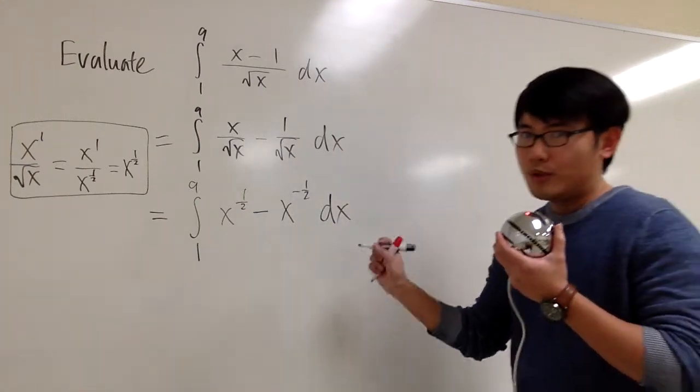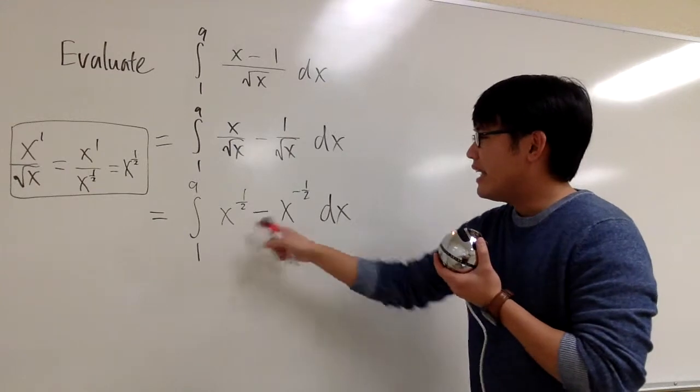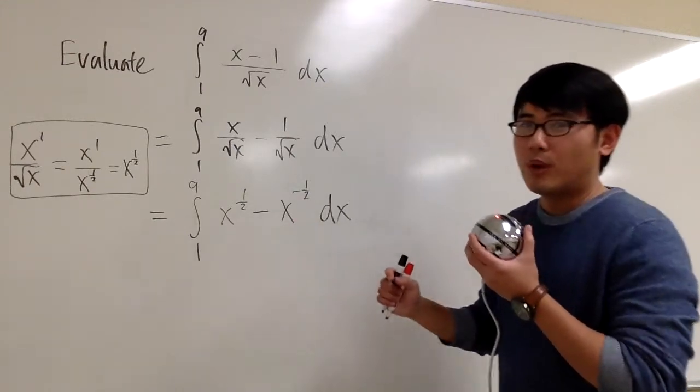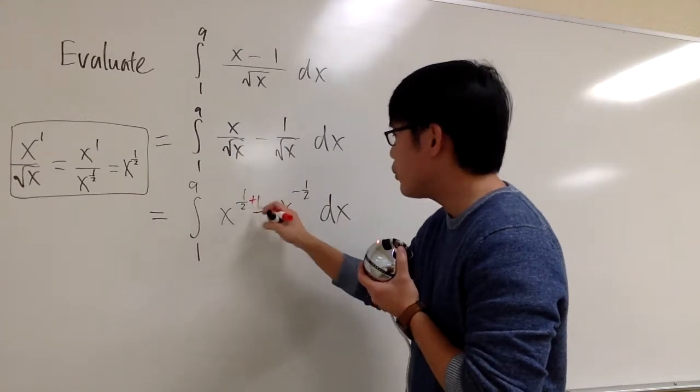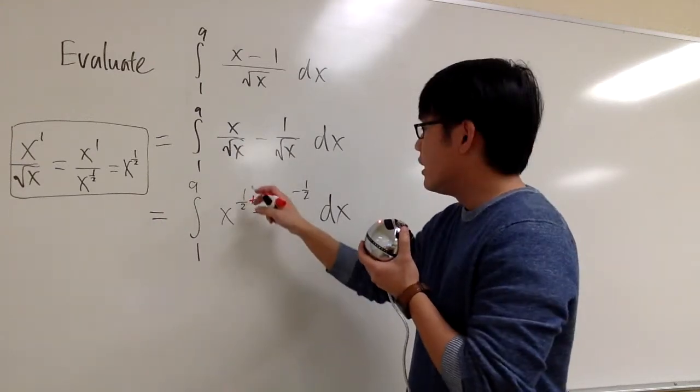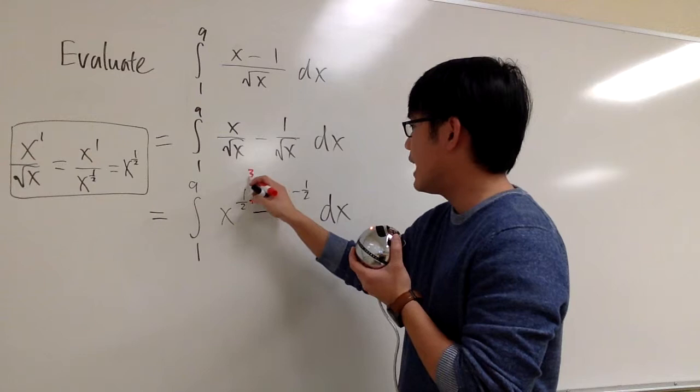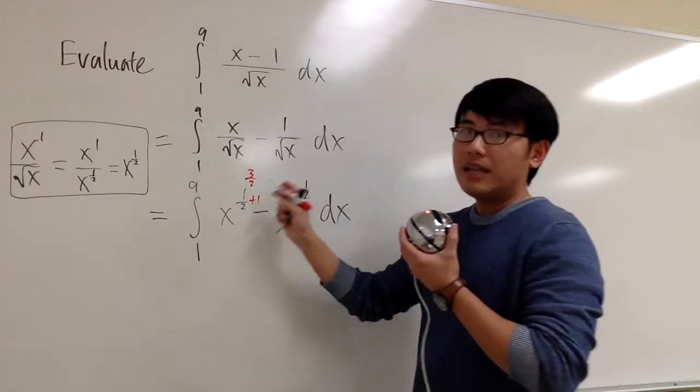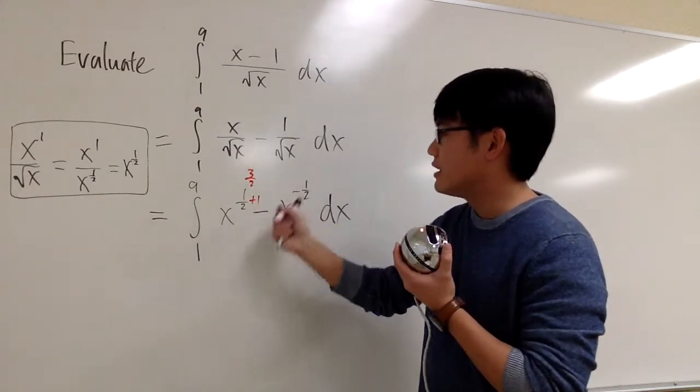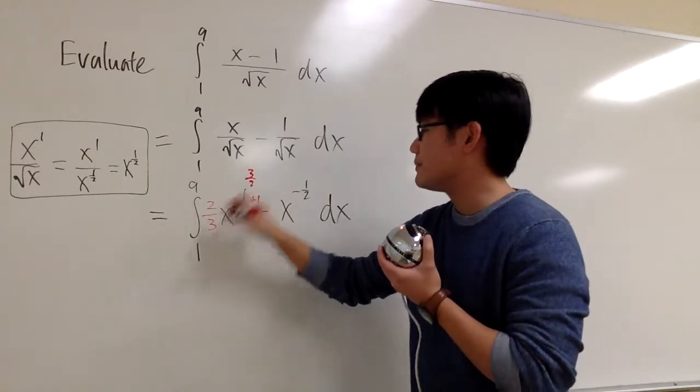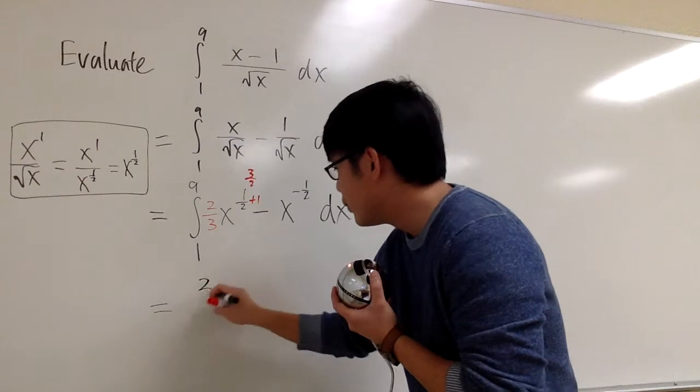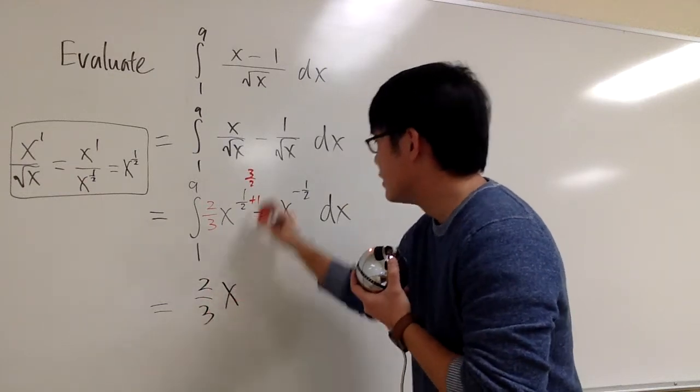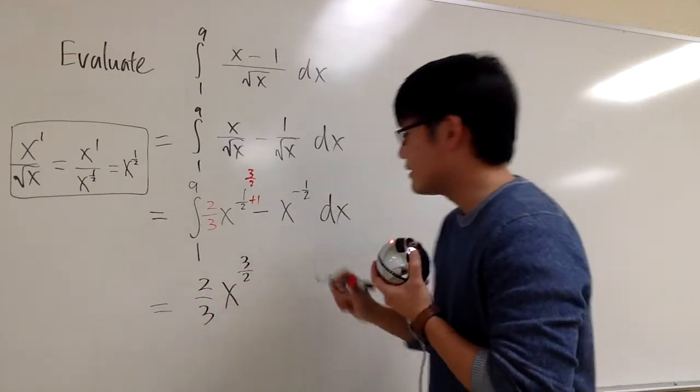And finally, we are ready to do the integral. They are in the power form, so we shall do the power rule backwards, the reverse power rule. Namely, we are going to add one to the exponent first. One-half plus one is three-half. And divide by the new exponent. Divided by three-half is the same as multiplied by two-thirds. For the first part, we are going to have two-thirds x to the three-half.